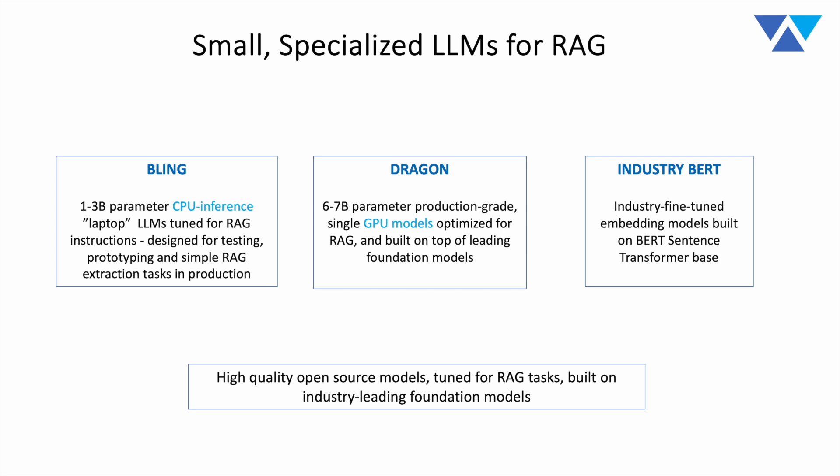Dragon joins two other model families we've put into open source. The one we'll quickly reference here is Bling. Bling was trained with a very similar methodology. The Bling models are all 1 billion to 3 billion parameters, really optimized for simpler extraction tasks or for testing and rapid prototyping. You could develop on your laptop using a Bling model, then quickly upgrade to a GPU model with Dragon — you'll see very similar behavior, just higher accuracy rates with Dragon.